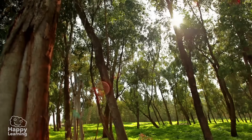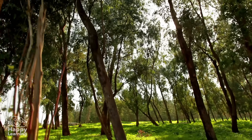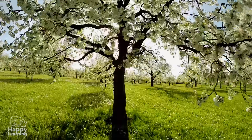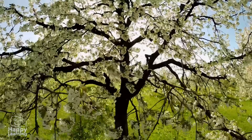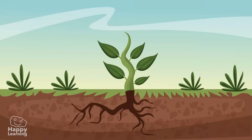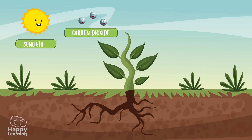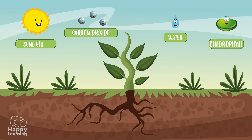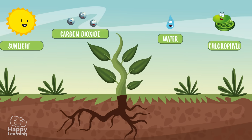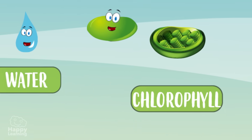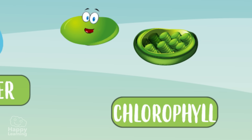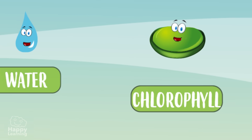Photosynthesis is a process in which plants make their own food to be able to grow and develop. In order to perform photosynthesis they need various elements: sunlight, carbon dioxide obtained from air, water, and chlorophyll, which is a green substance that all plants have and is fundamental for performing photosynthesis, since it could not happen without it.